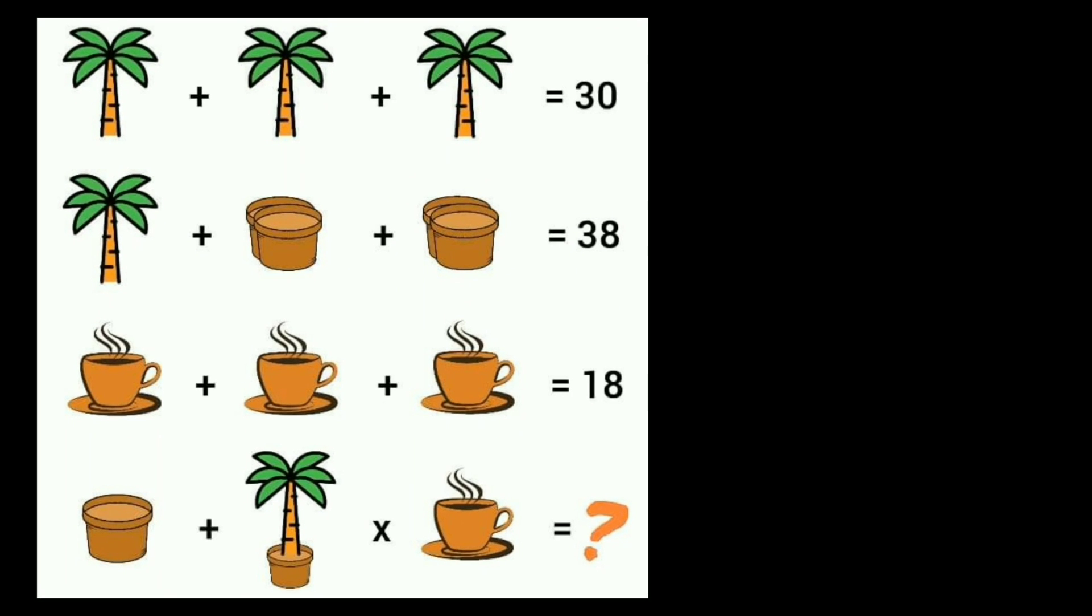The value of two flower pots is 14, which means the value of this one is 14. The value of the tree is also 10, and the value of one pot is 7. In equation 1, I can also write 10, 10, 10.